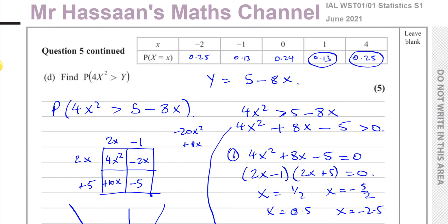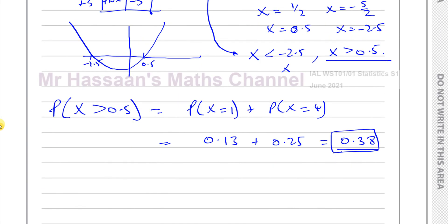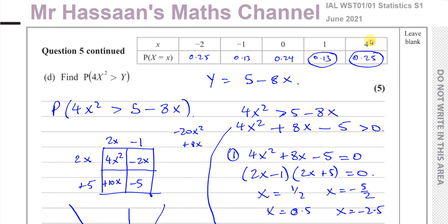So that's the answer to part D, and question 5 from the June 2021 S1 Statistics paper is complete. Other questions from this paper, from the topic of discrete random variables, or from other units of this International A-Level exam including P1, P2, P3, P4, M1, and IGCSE papers can be found by clicking the links shown and in the description. Thank you for watching and I hope to see you soon.